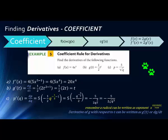To clarify notation: x to the power of a fraction means the numerator is the exponent and the denominator is the root. Also note that the derivative of g with respect to t can be written either as g prime of t or as dg over dt — both mean the same thing, just the derivative of g with respect to t.